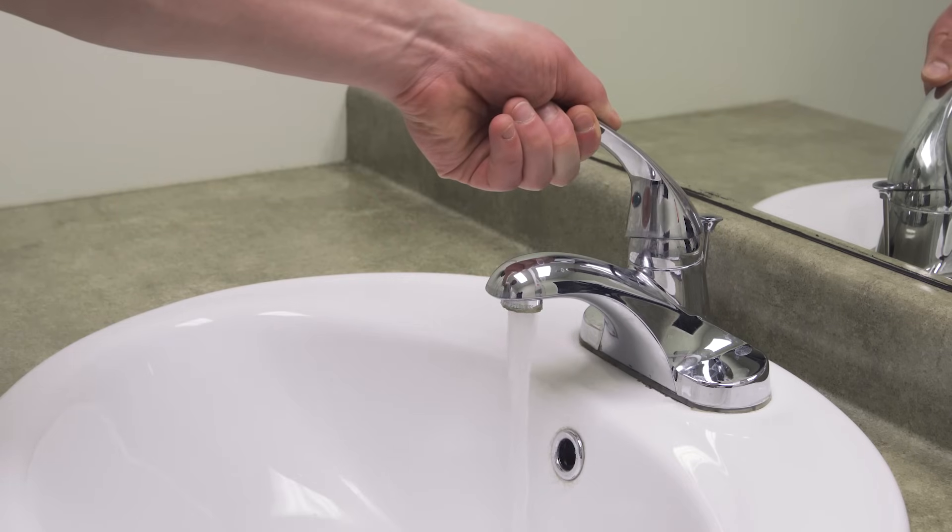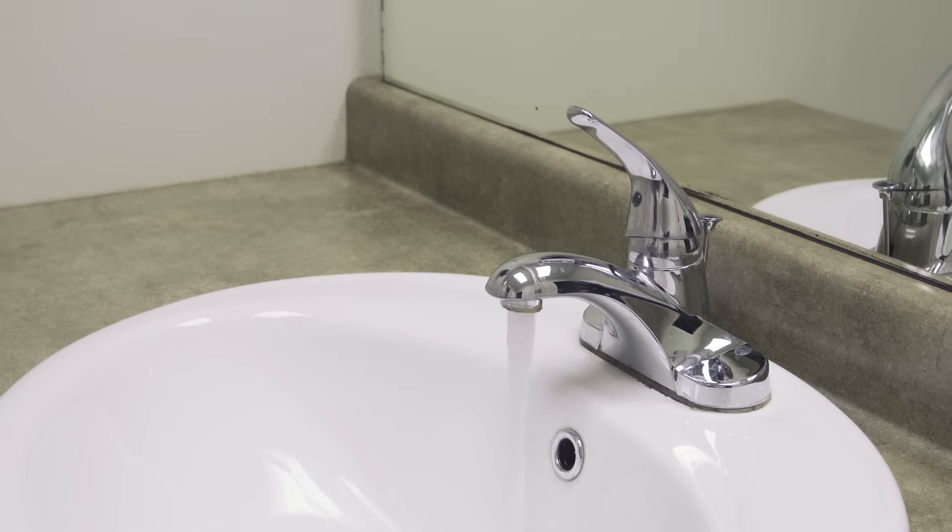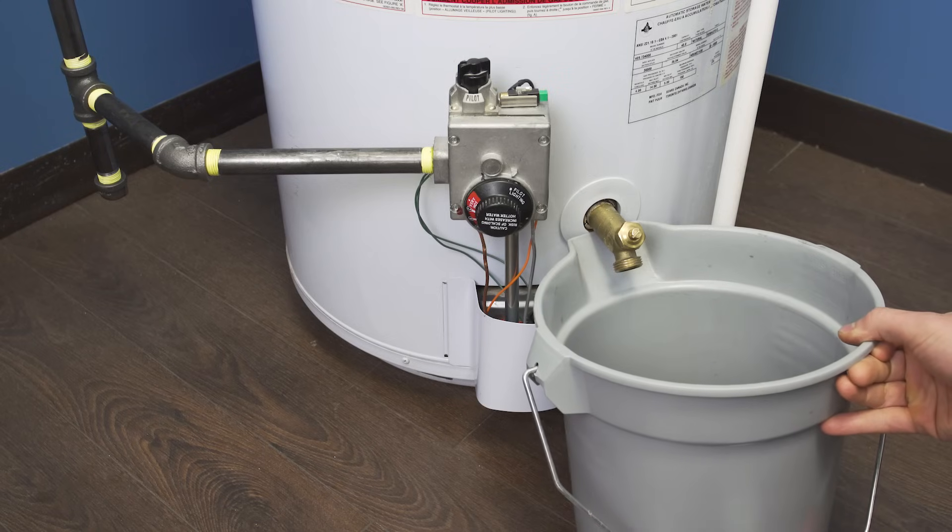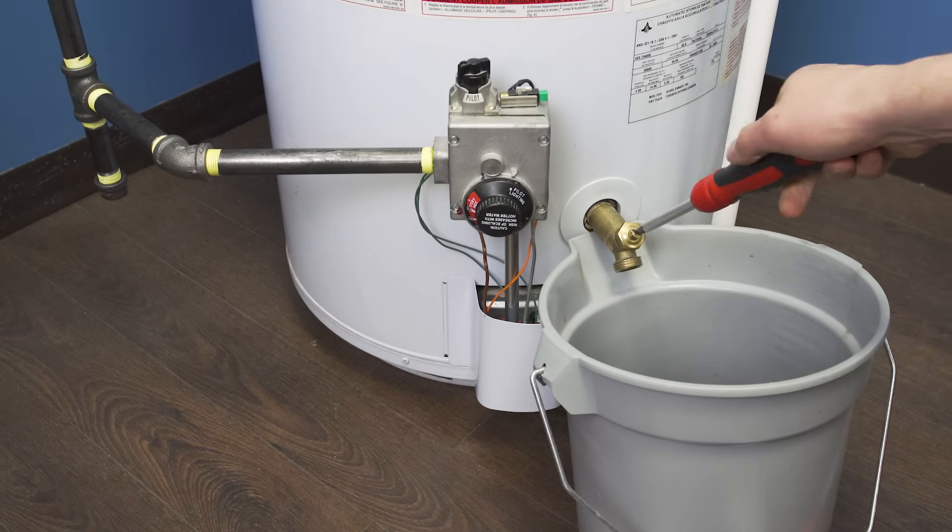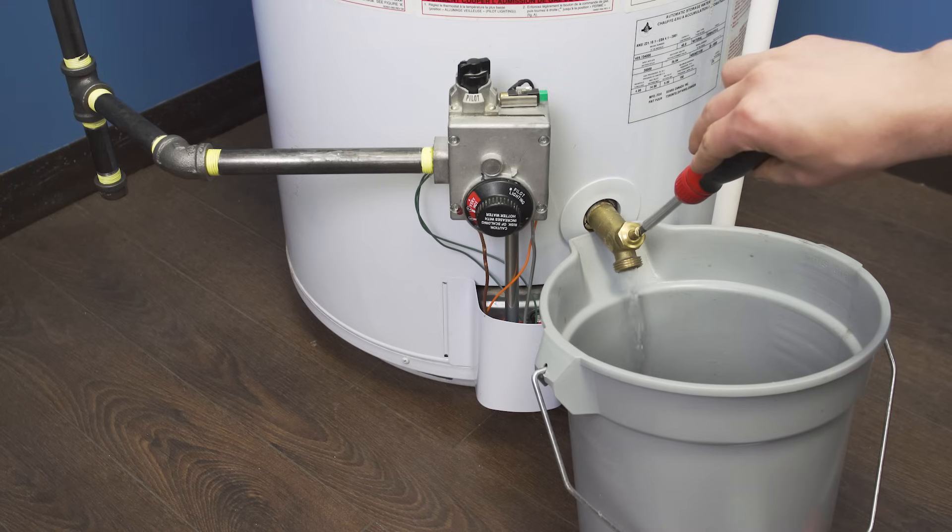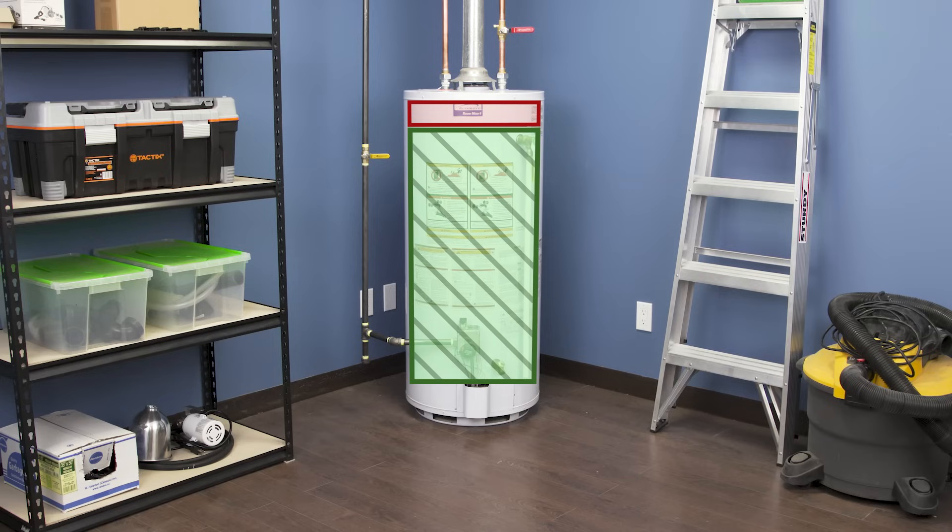First, open a hot water faucet in the house. This will let in air and relieve pressure in the system. Place a bucket underneath the drain valve. Open the valve to drain several gallons of water. This will reduce the pressure in the tank. Ideally you want to leave most of the water in the tank, as the weight will keep it from sliding around.